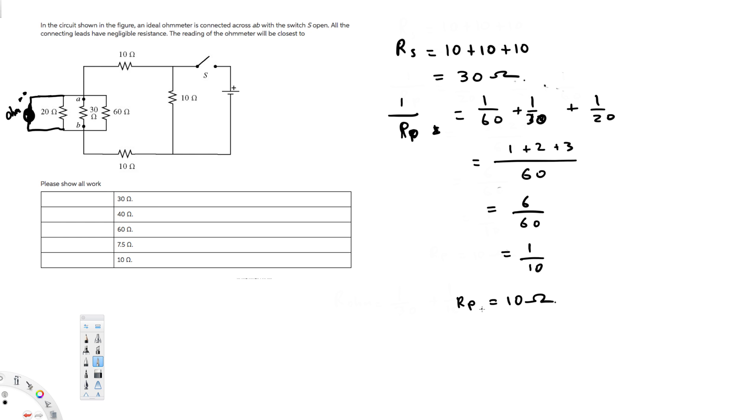Now we have found Rs and Rp. Now let's see how we can find the reading of ohmmeter. So if you connect this one like this, we have ohmmeter.